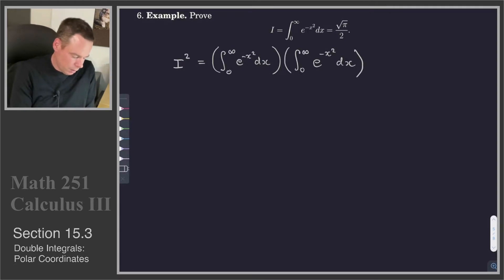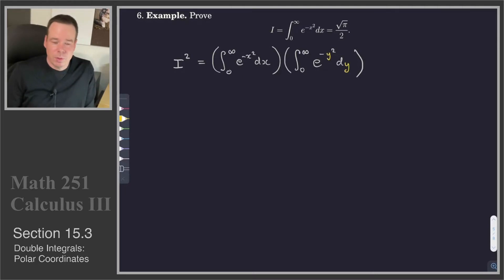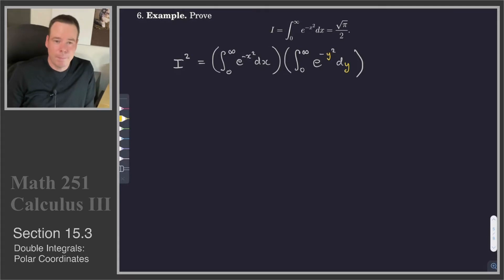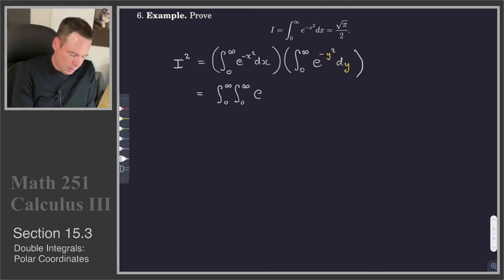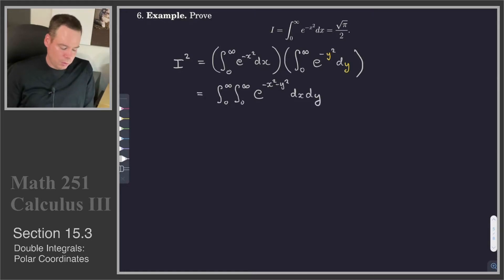In that second integral, it makes no difference what I call the variable — I can call it y, for example, because all I'm looking for is integrating it away to get a numerical value. So I can change the variable to y. And this is the key step, because that means I can write this as a double integral: the integral from 0 to infinity, 0 to infinity, of e to the negative x squared minus y squared dx dy.